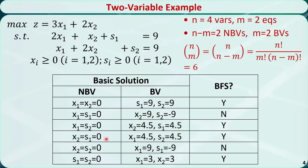For the first combination, x1 equal to x2 equal to 0. We plug these values into the equations. This part will be 0, so s1 equal to 9 and s2 equal to 9. Because both basic variables are non-negative, this is a basic feasible solution.